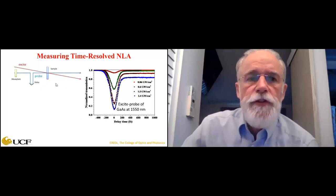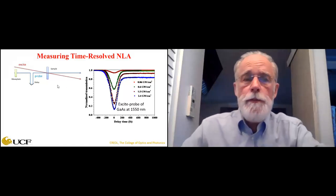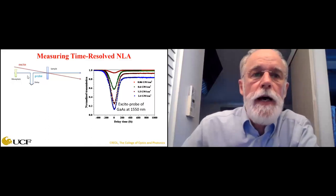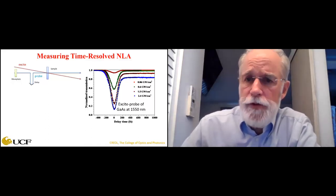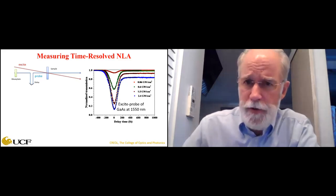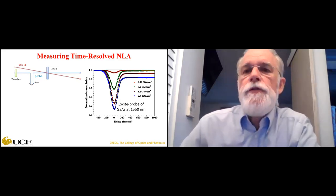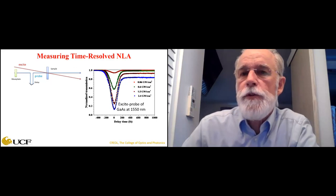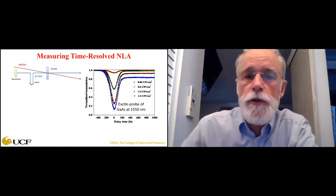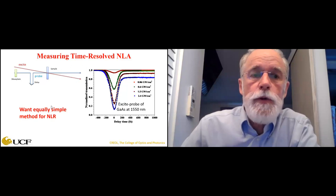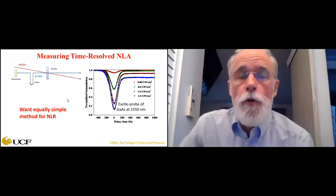The z-scan doesn't give you the temporal response, but there's another simple experiment that does: the usual excite-probe experiment, where you vary the time delay between pump and probe. For gallium arsenide with two-photon absorption at 1550 nm, the two-photon absorption just follows the cross-correlation of the exciting and probe pulses. Then you see the carriers that you've excited — turning the irradiance up, you see more and more carriers that last for nanoseconds, giving linear absorption from those carriers at long times.